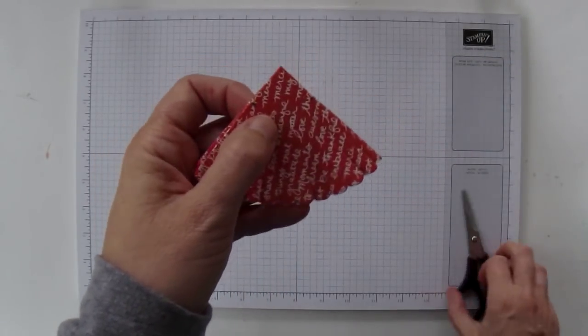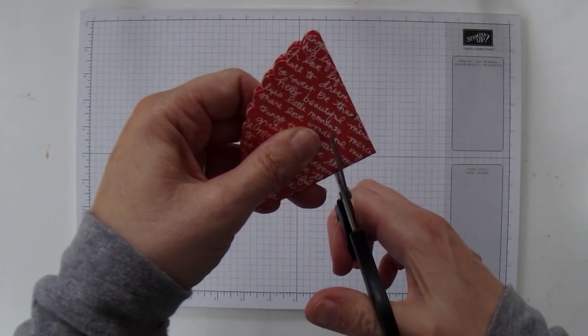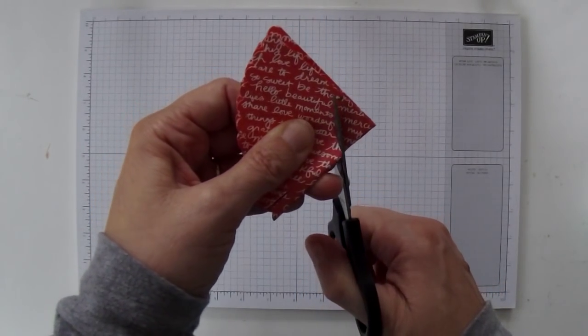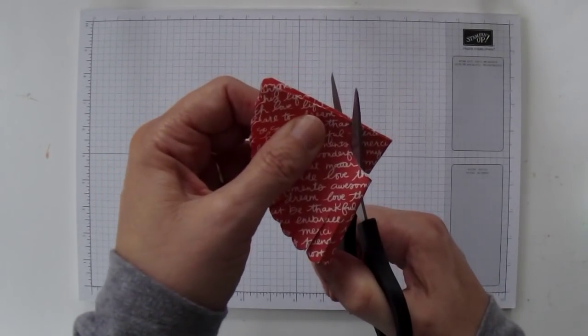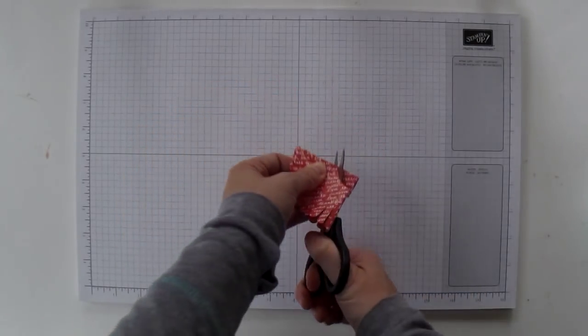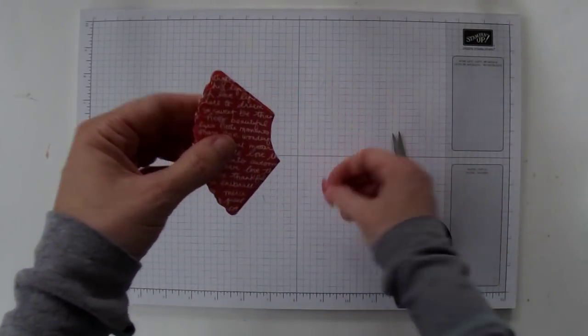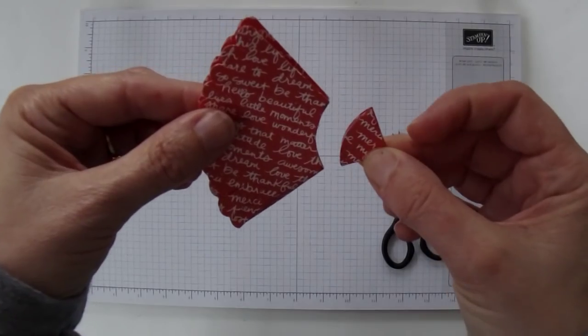And then I'm just going to cut in an arc so I've got this corner coming off and you can see here the piece that I've cut off.